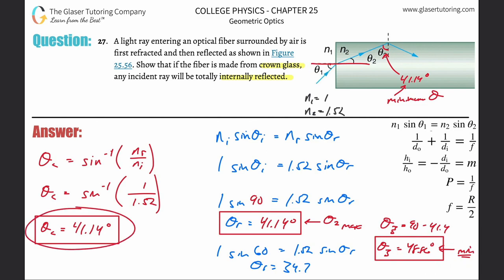In summary: find the critical angle for θ3, find the minimum angle θ3 can reach, and compare — if the minimum exceeds the threshold, total internal reflection is guaranteed for all incident rays. Thanks for watching — check out our other videos on OpenStax problems for chemistry and pre-calculus as well.